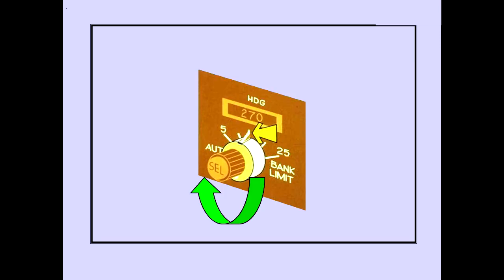Rotating the bank angle limit selector sets the maximum bank the autopilot will use in the heading select mode.